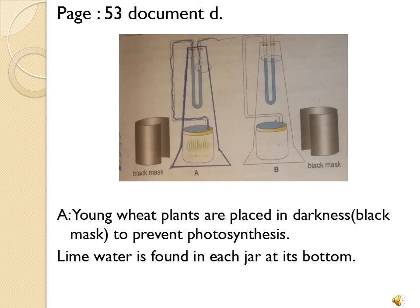Lime water is found at the bottom of each jar. So we have two jars, A and B. Jar A has a green plant, jar B does not. Both jars are covered by a black mask to prevent photosynthesis, so we can focus only on respiration. Lime water is placed at the bottom of each jar.